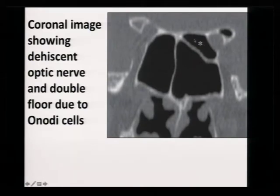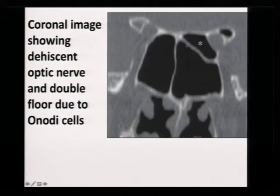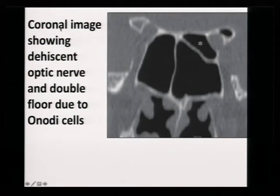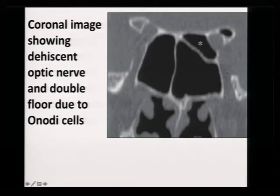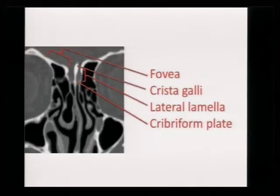As Professor Deepak has said, you may have an Onodi cell where the optic nerve may be dehiscent with no bony wall. If you find a double floor — you go inside the cell and find something horizontal — that is an Onodi cell, which is a posterior ethmoid cell in close relation to the optic nerve. It is superior and posterior, so it usually does not cover the carotid. Double flooring means there may be an Onodi cell; you should be very careful.